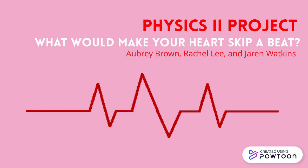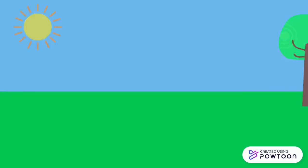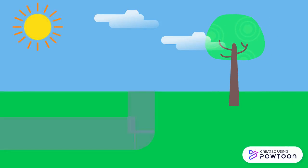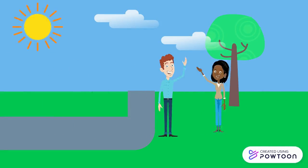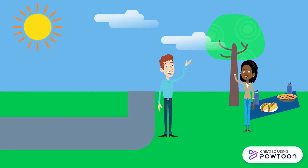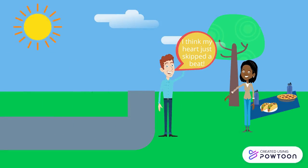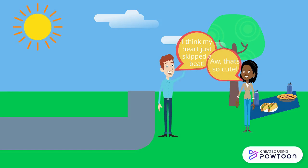What would make your heart skip a beat? Our story starts with Bob on a date in the park, when he tells her, 'I think my heart just skipped a beat.' Thinking he's trying to win her over, his date says, 'that's cute.'